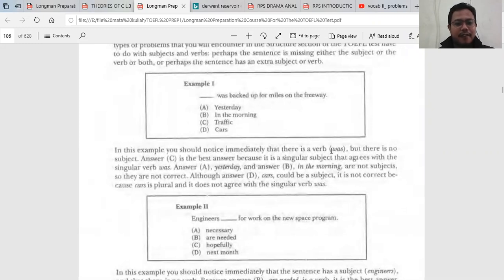Is there any subject? No, there is no subject. Is there any verb? Oh yes, of course there is a verb 'was backed,' so we need a subject: yesterday, in the morning, traffic, or cars. A is wrong, B is also wrong, why? Because A and B is not a noun. Then look at option C and D: traffic - it is a noun. Cars are also a noun, but look at the verb - the verb is 'was.'